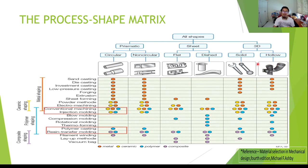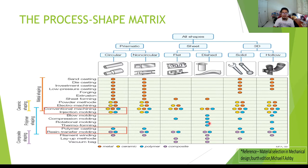Looking at shape rather than material: what shapes can be produced by available processes? For example, a flat polymer sheet cannot be sand-cast; compression molding is suitable. For a dish shape, blow molding, thermoforming, or rotational molding can be used. This chart cross-references material, process, and the shape you want to produce.